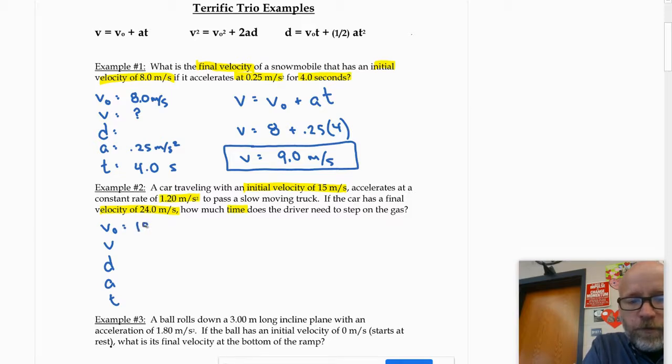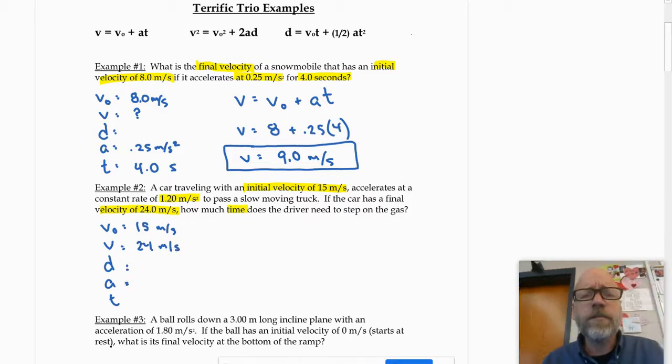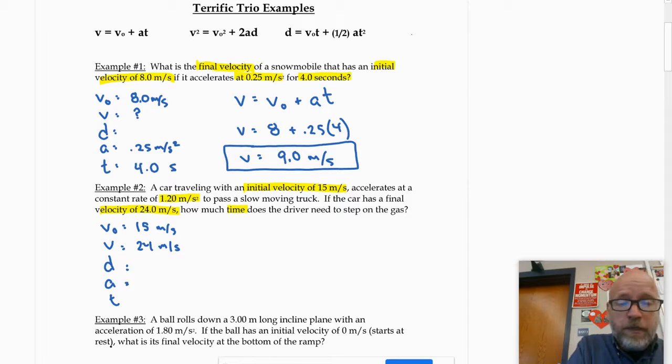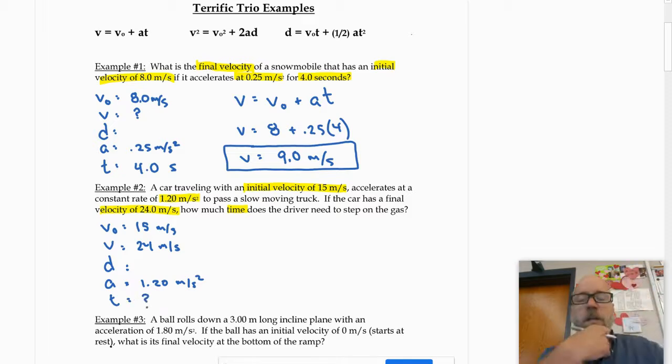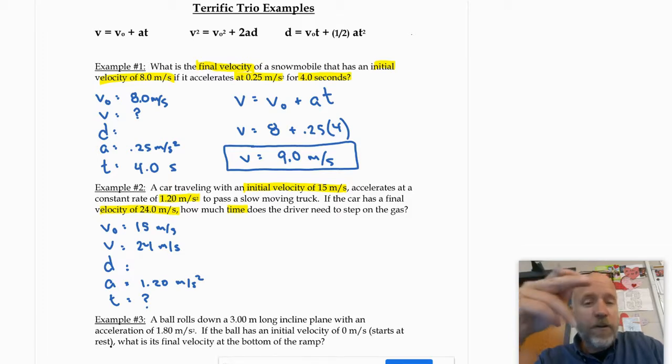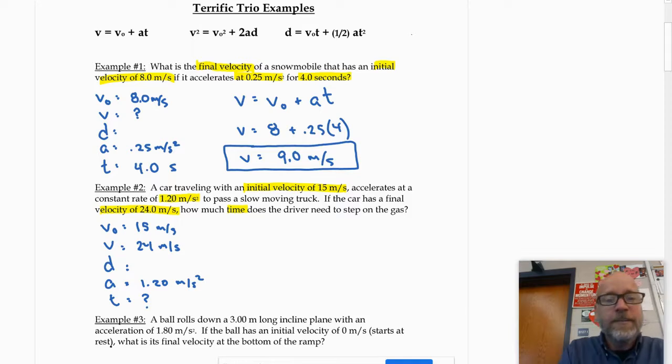Okay. So next, let's make our chart. V0, V, D, A, and T. Now, the initial velocity is 15 meters per second. Final velocity is 24. The acceleration, actually the displacement, is that given? Nope. The acceleration is going to be 1.2 meters per second squared. And the time is what we're looking for. So again, we've got to figure out which one of these relationships would allow us to solve for time. Now, I know that you see it right away because you guys are good. But another way to think about it is which formula doesn't have D? Yeah, that's right. The first one. The easy one. Good.